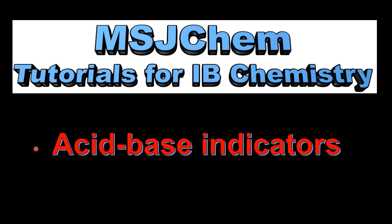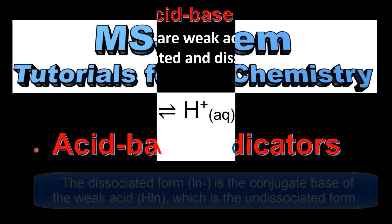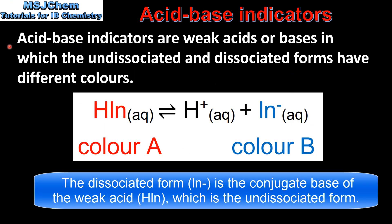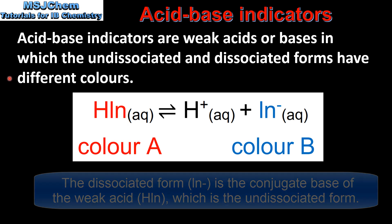This is MSJChem. In this video I'll be looking at acid base indicators. Acid base indicators are weak acids or bases in which the undissociated and dissociated forms have different colors.